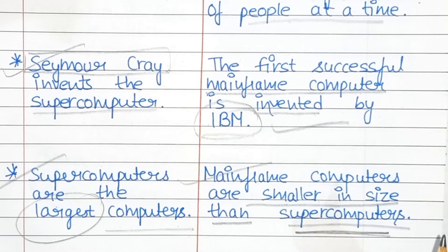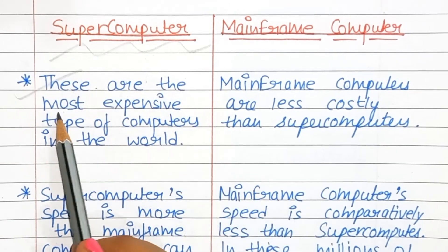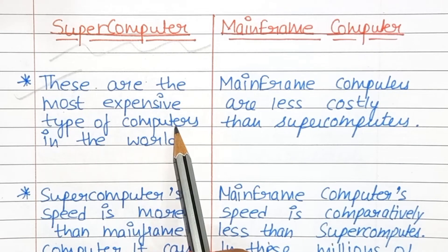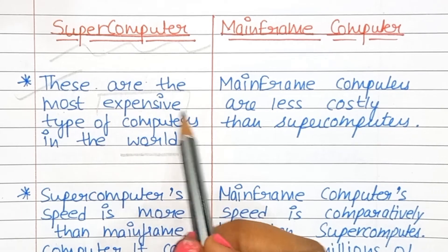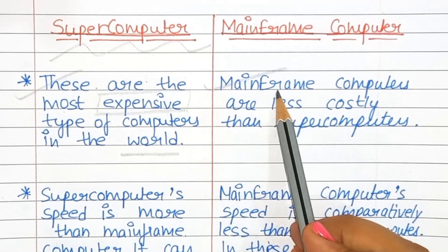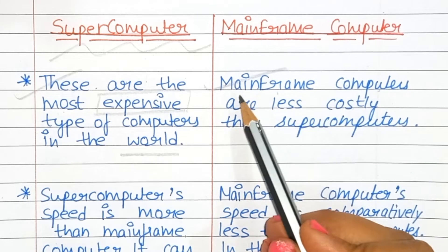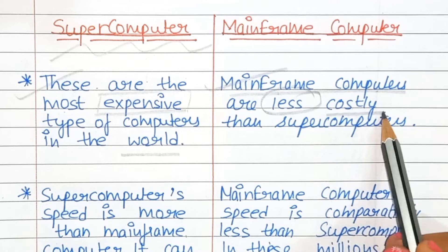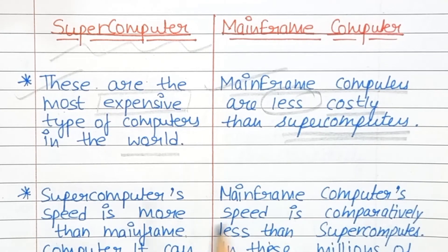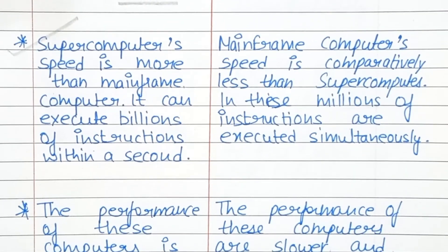The next difference is cost. Supercomputers are the most expensive types of computers in the world, while mainframe computers are less costly as compared to supercomputers.